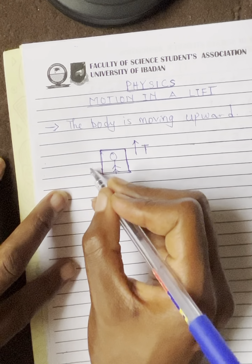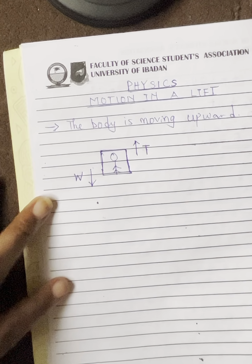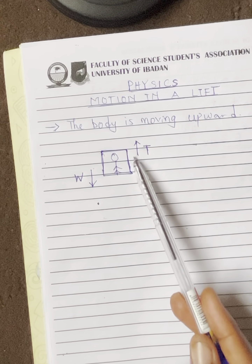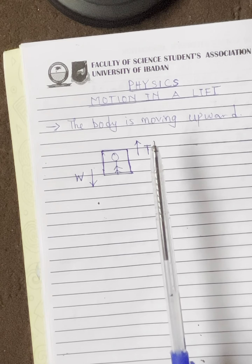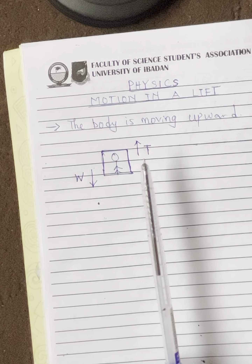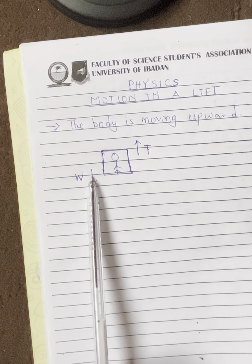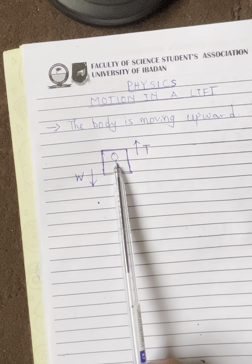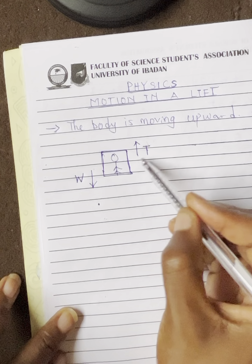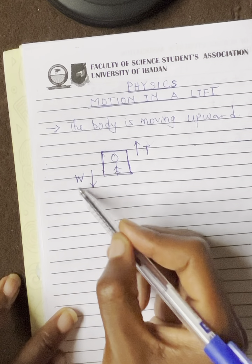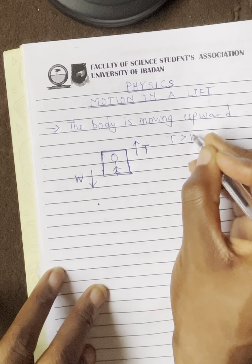But the weight of the body is acting downward, because the weight of an object is always a downward force. Now because the body is moving upward, it means the summation of all the forces in the upward direction is greater than the summation of all the forces acting downward. So the tension in the lift is greater than the weight of the object.